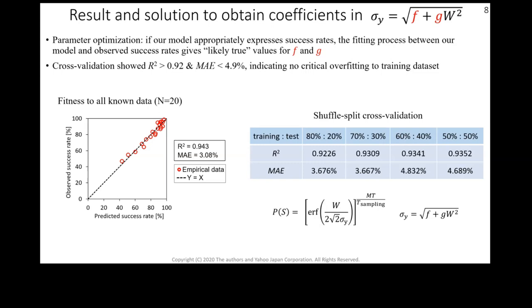The result shows that when we use all data points, the R squared is 0.943 and the mean absolute error is about 3%. Also, we check the prediction accuracy by cross-validation, which shows the good prediction accuracy of the model.